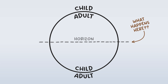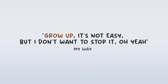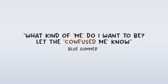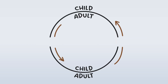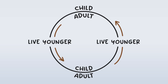So then what happens here? Well, if you're a child, you grow up and become an adult. Growing up is when you start to do things your own way. It's also the point where someone may experience confusion, where people start to question the world around them and their own identity. But how does someone transition from being an adult to being a child? I think the answer is in the lyrics of 'Fever' — if you're an adult and you live younger, you become a child.